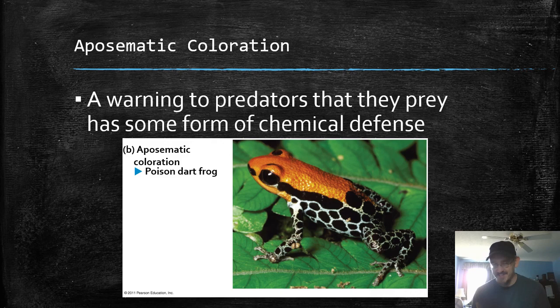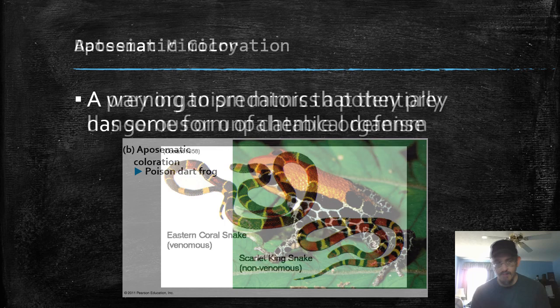If you're a poison frog, it still sucks if something has to eat you to find out you're poisonous. So you might show off that you're poisonous — to do that is known as aposematic coloration. That's when a predator sees this bright orange frog and says, 'Nope, not going to eat that.' So that's a warning to predators that you have some kind of chemical defense. That's aposematic coloration.